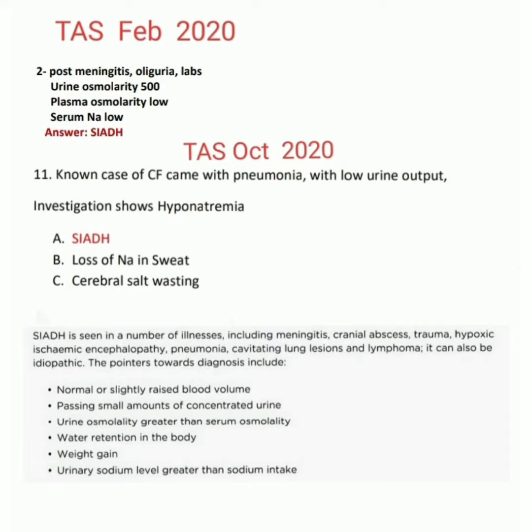The next question gives a scenario where a known case of cystic fibrosis presents with pneumonia and low urine output. Investigations show hyponatremia. The answer is again SIADH. Now explaining the answers — we know that SIADH is seen in a number of illnesses.